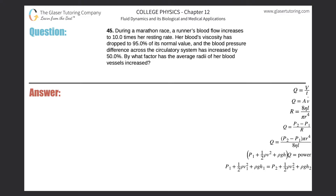Problem 45: During a marathon race, a runner's blood flow increases to 10 times her resting rate. Her blood's viscosity has dropped to 95 percent of its normal value, and the blood pressure difference across the circulatory system has increased by 50 percent. By what factor have the average radii of her blood vessels increased? So there's a lot going on here. Let's talk about the variables that are changing: blood flow Q, viscosity eta, blood pressure P, and radius r.